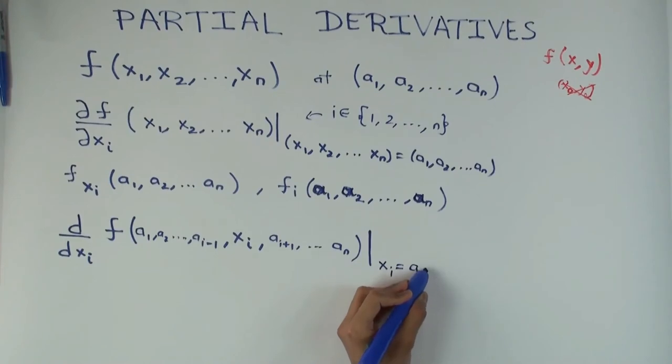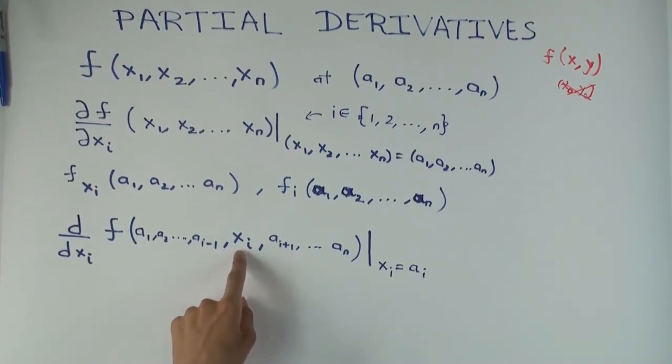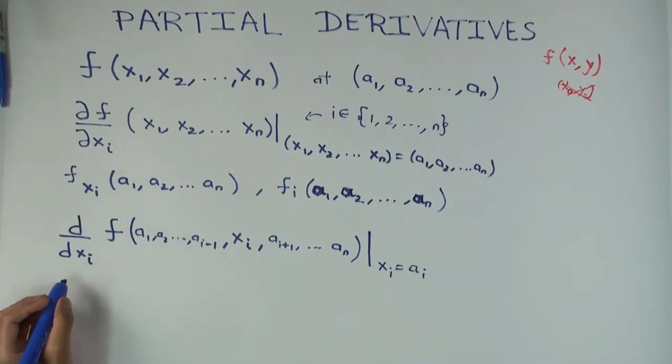I just need to specify the xi value. At what point do I evaluate? Ai. A sub i. Okay. So this is the net. So this basically, I'm just thinking of a function where all the other coordinates are fixed and I'm just keeping this particular coordinate variable.